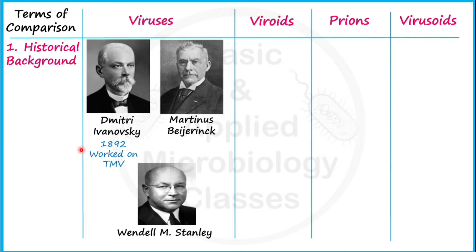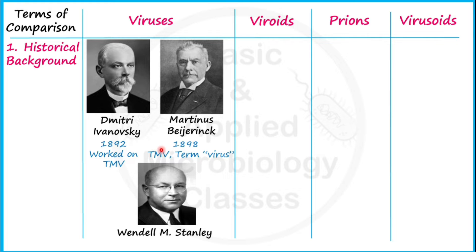As an outcome of his research, Ivanovsky found that something smaller in size than bacteria is able to cause diseases in tobacco, but at that time it was not known that it was a virus. Later, Martinus Beijerinck, a Dutch microbiologist and botanist, extended this study on TMV and concluded that the infectious agent responsible was a new kind of biological agent, and he coined the term 'virus.'